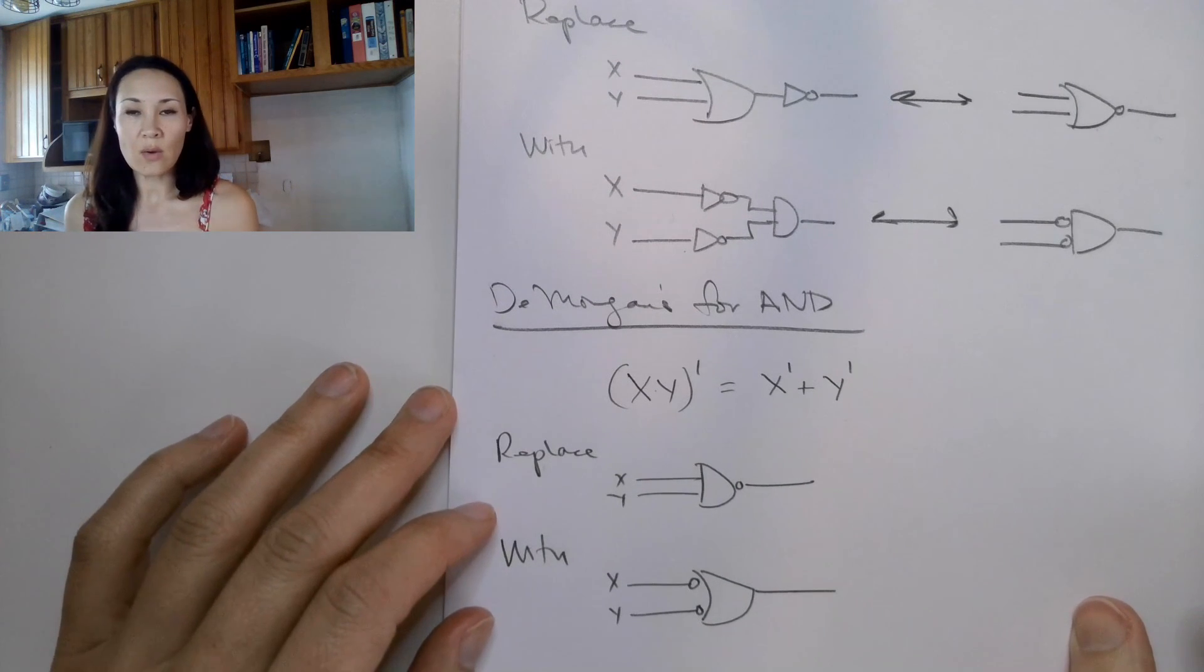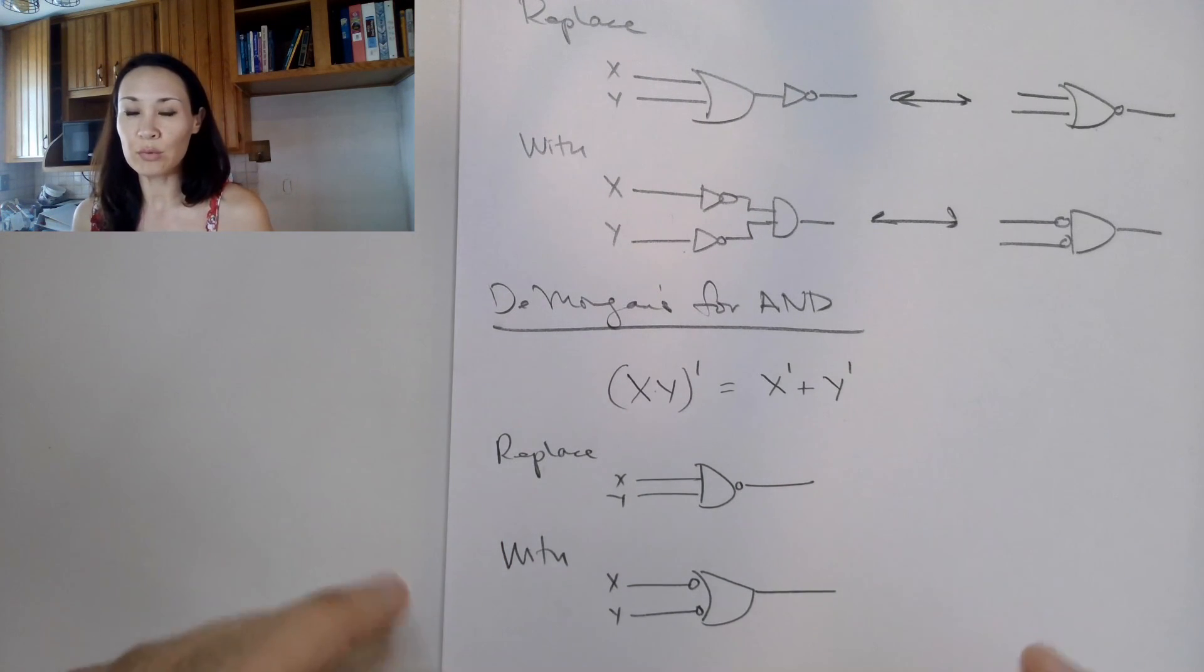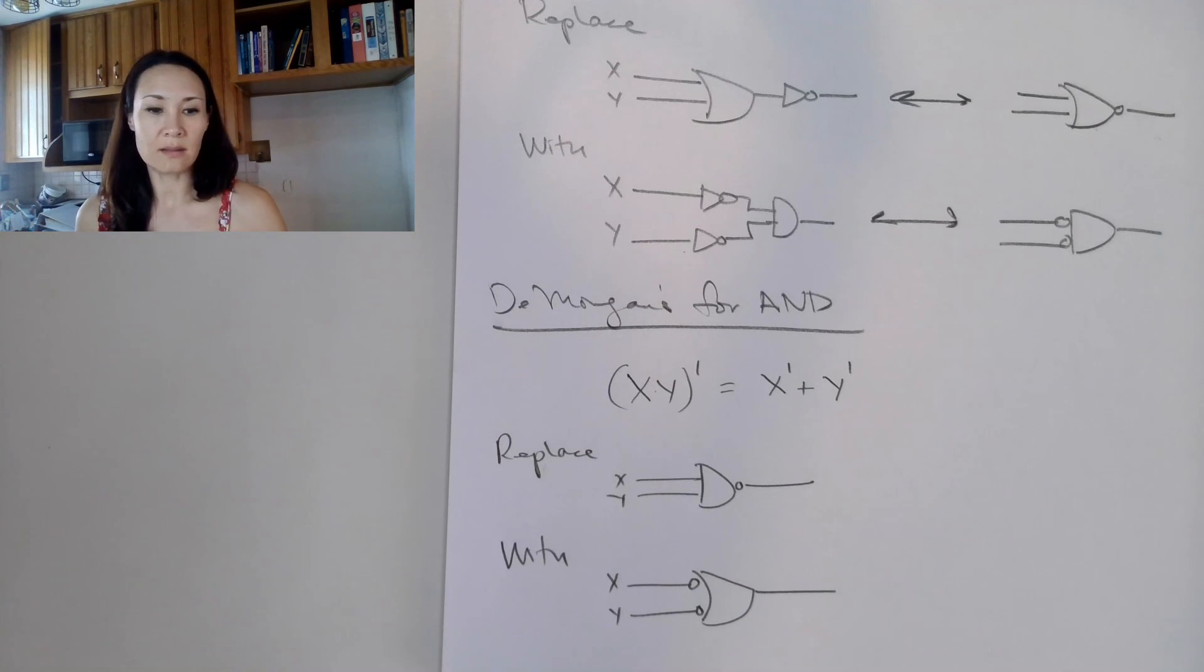So in the next video, I'll show you some examples for how we simplify Boolean functions using De Morgan's theorem.